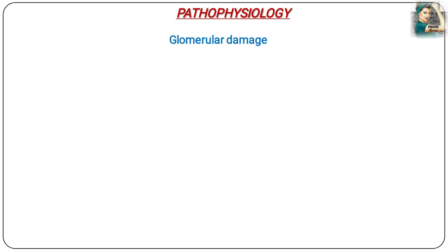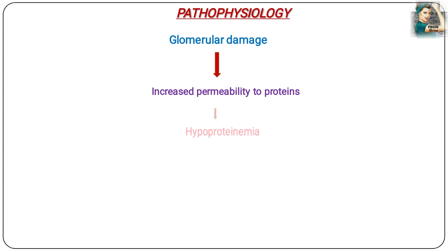Now moving towards the pathophysiology. First, there is glomerular damage due to some disease or any other abnormality, which results in the increased permeability of the glomerulus towards blood proteins. That is, blood proteins are allowed to move out of the blood into the urine, which results in hypoproteinemia — that is, the low levels of blood proteins.